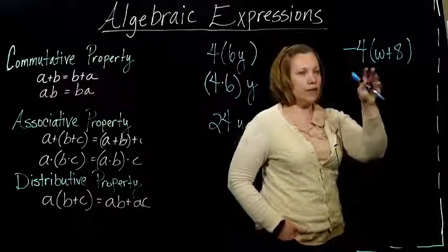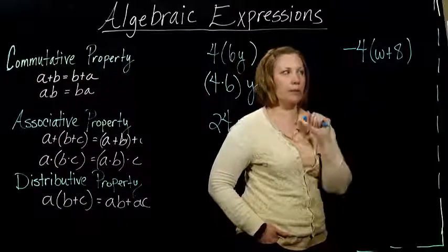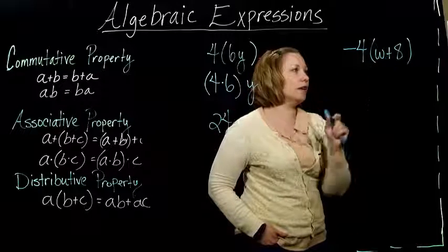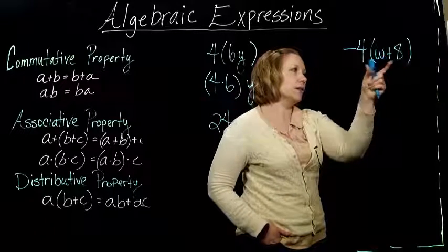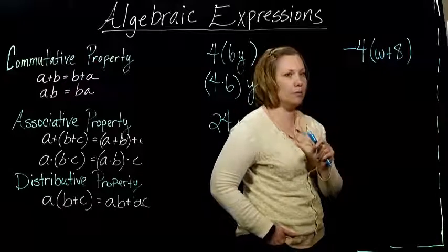The next example I have is a little bit more complicated. I have negative 4 times the quantity of w plus 8, right? That w plus 8 in parentheses.